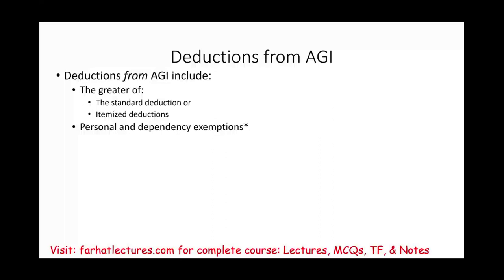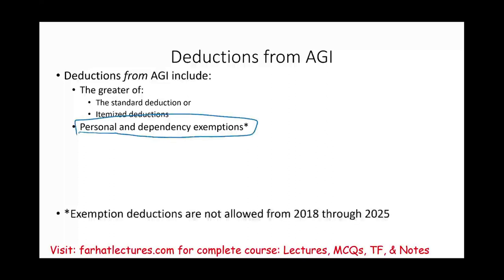You can also take personal and dependency exemptions, but those deductions from AGI are suspended from tax year 2018 to 2025. The law resets starting 2026, and you will have those personal and dependency deductions again.